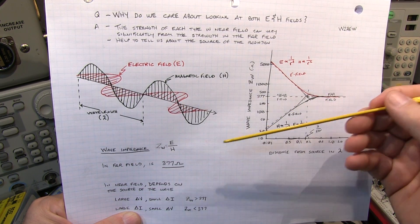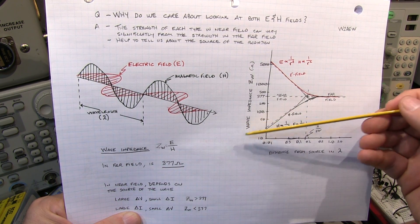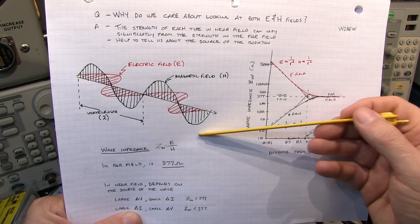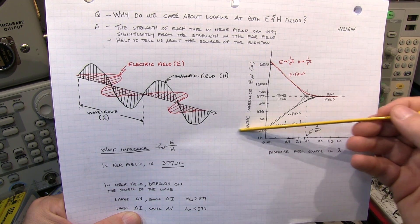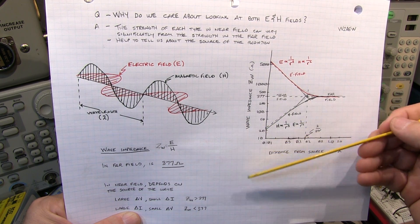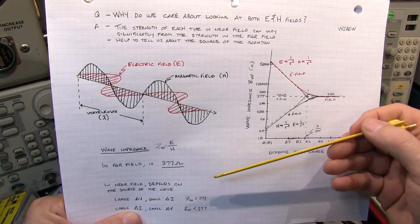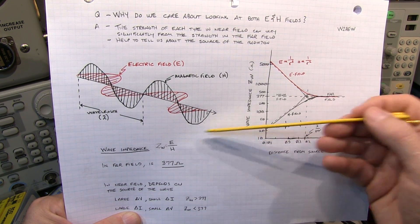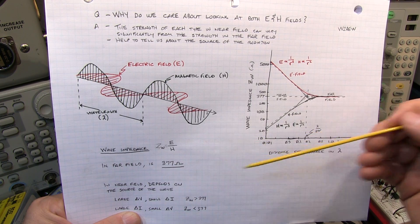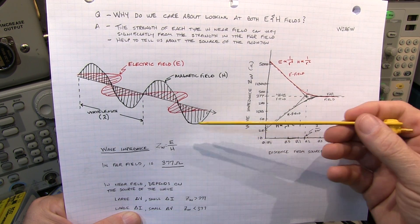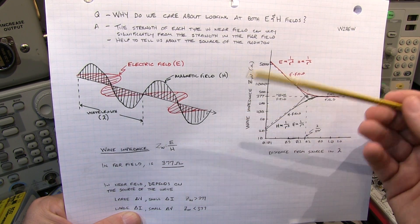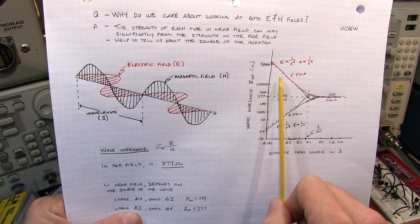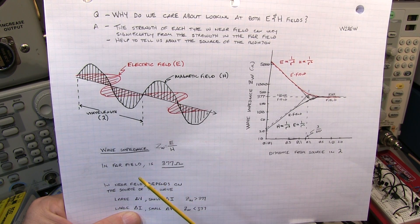On the other hand, you might have a power supply trace that's going to a bunch of circuits. The power supply trace might have very little voltage change on it, but the current changes through it, depending on the load, could be quite significant. Now in that case, we're going to have a lot of high speed current variation but very little voltage variation. So in that case, the magnetic field or H field would be quite high and the E field will be quite low. But in both cases, those fields will ultimately converge out into the far field.